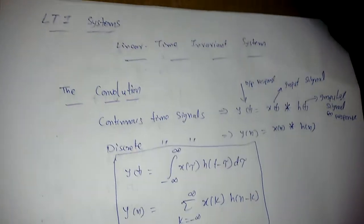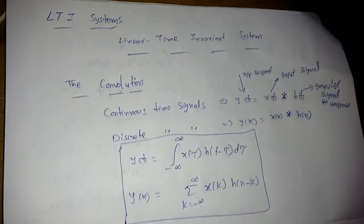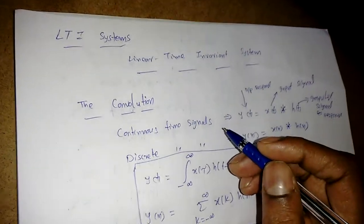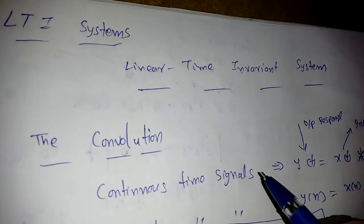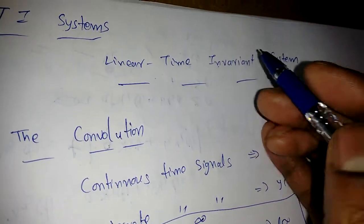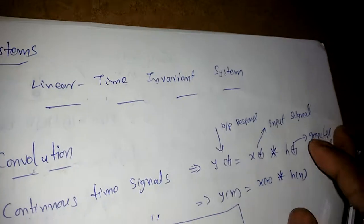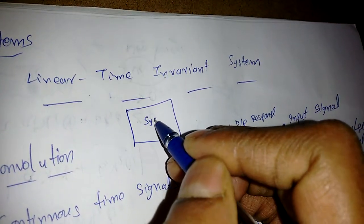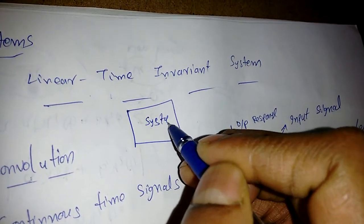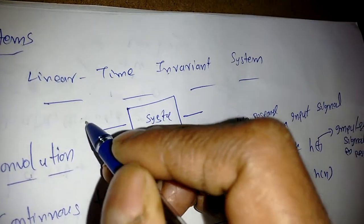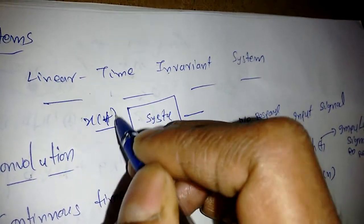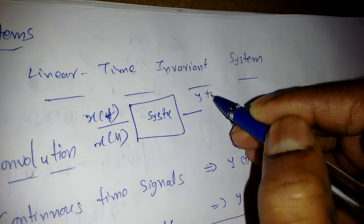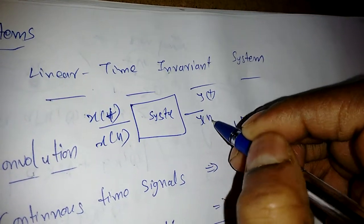Good morning everyone. In this lecture I'm going to discuss linear time-invariant systems. Any system should respond to any input signal — it may be X of T or X of N — and it should produce Y of T or Y of N.